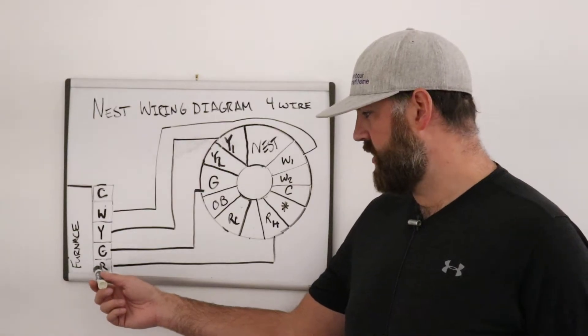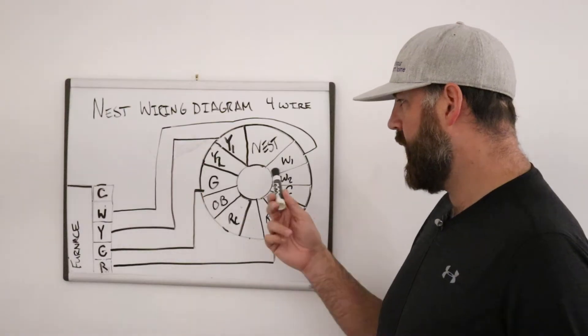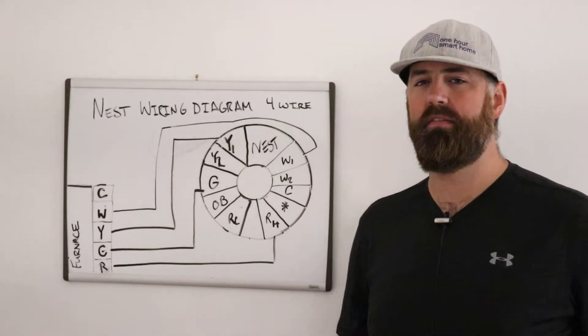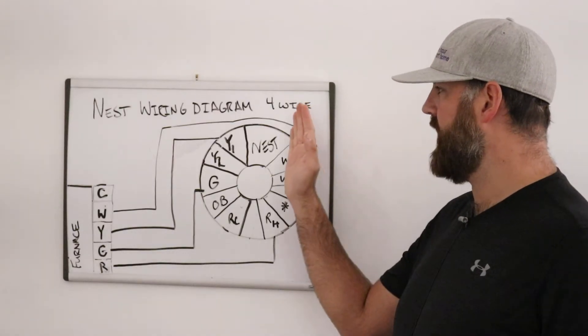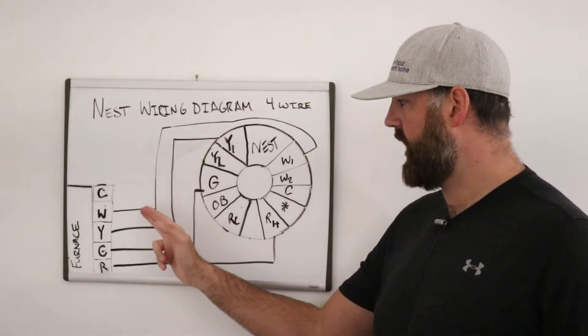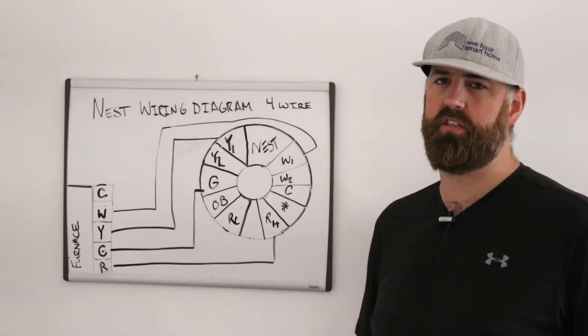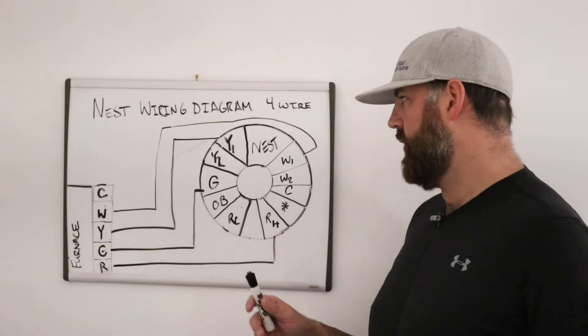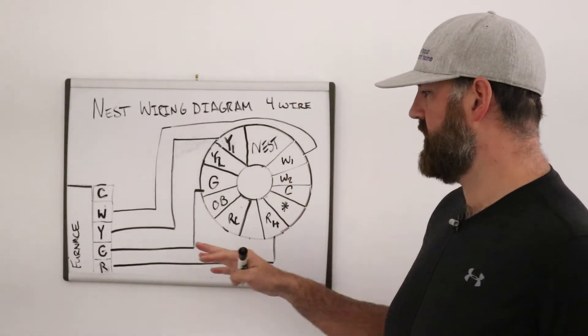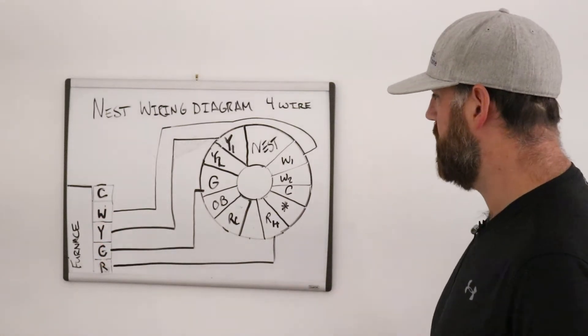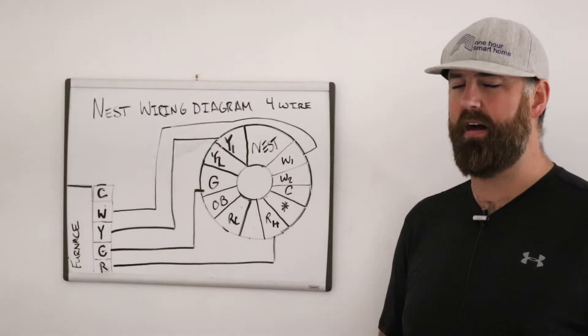And what's happening is your R wire provides power to the thermostat. And then depending on what setting you have the Nest on, whether heat or cool, it will then send that signal back down the terminal block to the appropriate terminal to trigger your furnace to turn on. So, the Nest over here has way more terminals than we need from our furnace and way more terminals than typically the number of wires that we have.